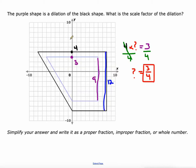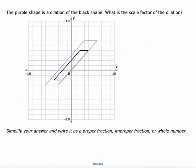So the answer is either four thirds or three fourths. But four thirds would be an enlargement, three fourths would be a reduction because it's less than one. Here's another one.